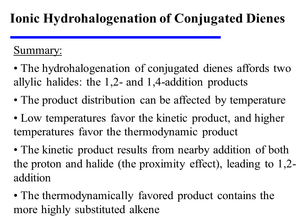In summary, the hydrohalogenation of conjugated dienes affords two allylic halides: the 1,2 and 1,4 addition products. The product distribution can be affected by temperature. Low temperatures favor the kinetic product.